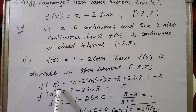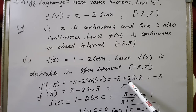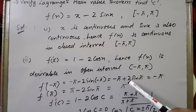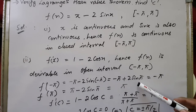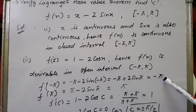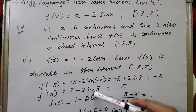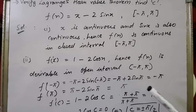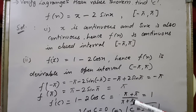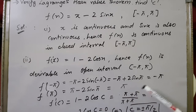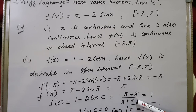Now calculating the values: f(-π) = -π - 2sin(-π) = -π + 2sin(π) = -π + 0 = -π (since sin(π) = 0). f(π) = π - 2sin(π) = π - 0 = π. Applying the formula f'(c) = [f(b) - f(a)] / (b - a): f'(c) = 1 - 2cos(c), and [f(π) - f(-π)] / (π - (-π)) = (π + π) / (2π) = 2π / 2π = 1.